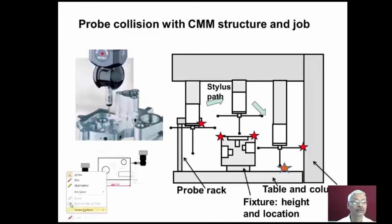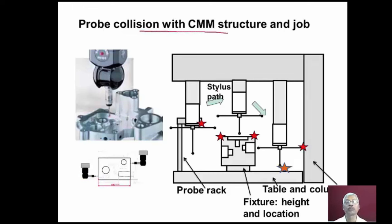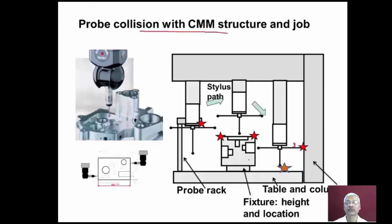Let us understand how probe collision with the CMM structure or the job is avoided. We have the table of the coordinate measuring machine, the column, the overarm on which the probe head is provided, and the probe rack. The workpiece is mounted on a fixture. When the stylus is checking an inside hole feature, the other stylus should not touch the table, and the third stylus should not touch the column. So we have to locate the fixture properly and select a fixture of proper height.